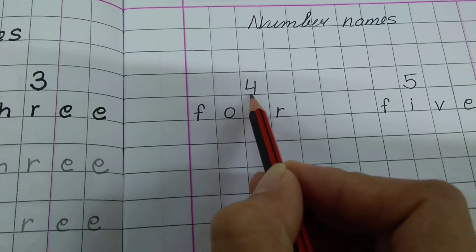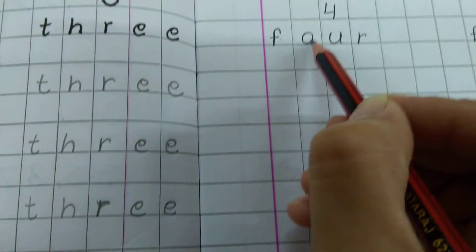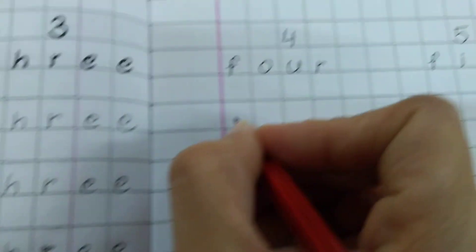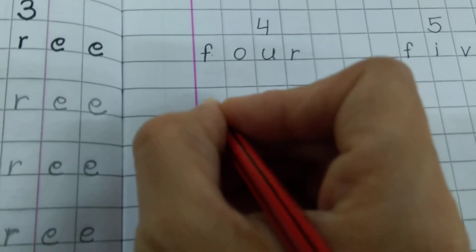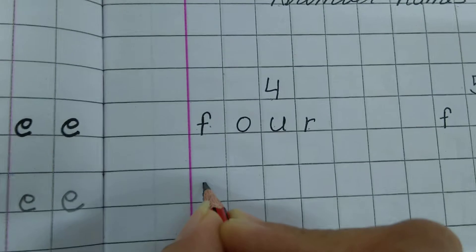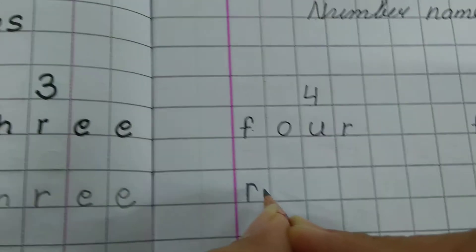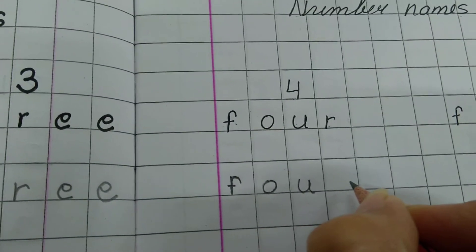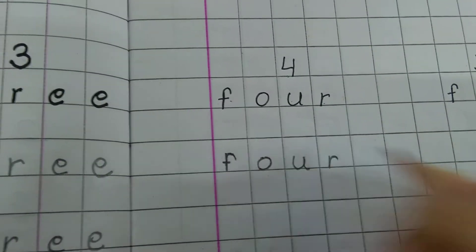Number 4. And spelling for number 4 is F, O, U, R. 4. You will write here. F, O, U, R.